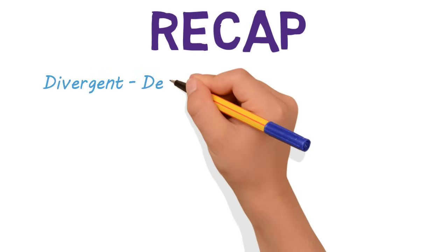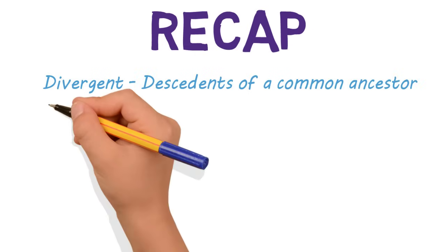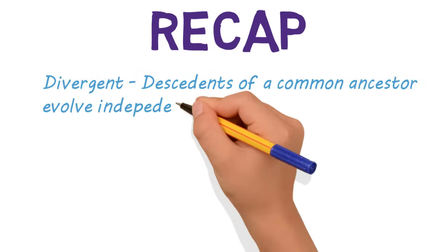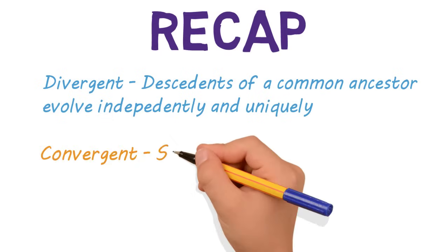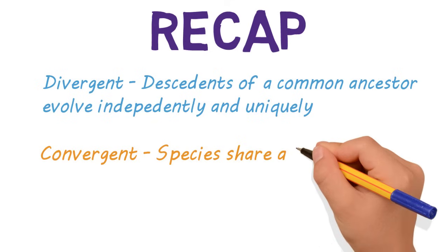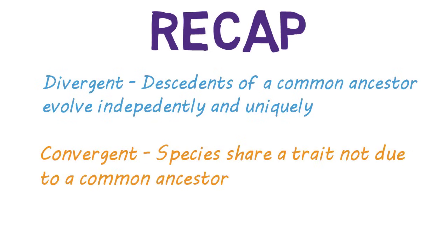So let's recap. Divergent evolution is when descendants of a common ancestor evolved independently and uniquely, like the dog, the wolf, and the fox. While convergent evolution is when species share a trait not due to a common ancestor, such as birds, bats, and butterflies' ability to fly.